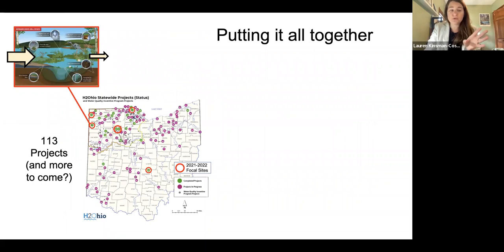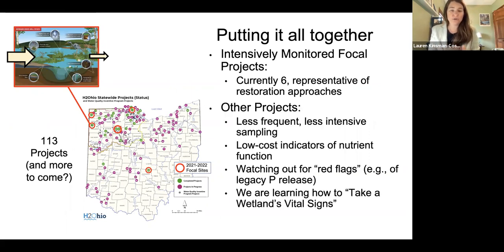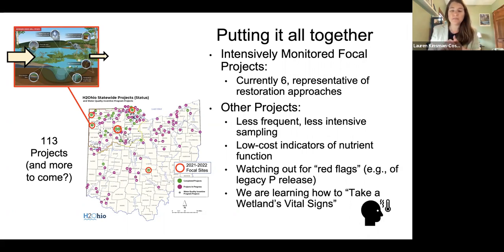We realize that the intensive work described for Forter Bridge will never be realistic to employ across all 113 projects. Currently we have about six intensively monitored focal projects where we're applying everything we can to get the best estimate of nutrient budgets. In other projects, we're employing less frequent, less intensive sampling to develop low-cost indicators of nutrient function — watching for red flags like high phosphorus concentrations that might indicate phosphorus release. Through these efforts, we're learning how to take a wetland's vital signs: developing indicators that are meaningful snapshots of how a wetland might be removing nutrients, in the same way taking your temperature is a meaningful snapshot of your health to your doctor.